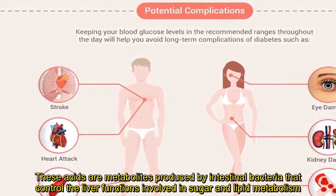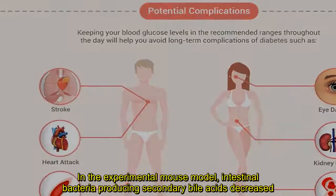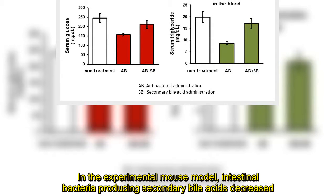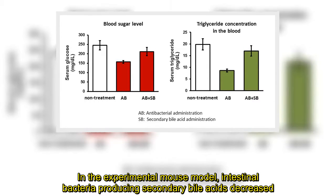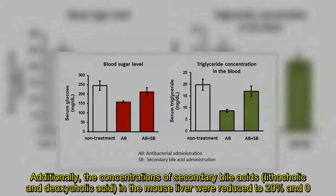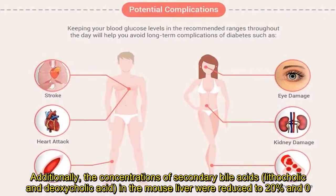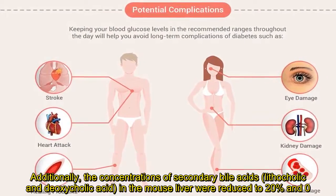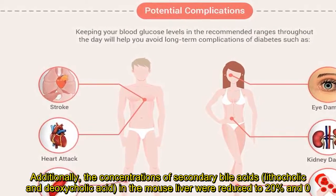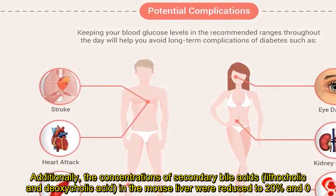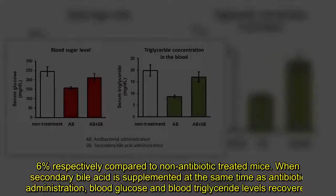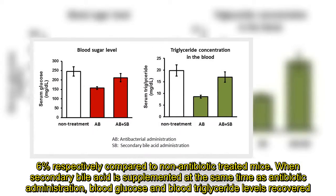In the experimental mouse model, intestinal bacteria producing secondary bile acids decreased. Additionally, the concentrations of secondary bile acids — lithocholic and deoxycholic acid — in the mouse liver were reduced to 20% and 0.6% respectively compared to non-antibiotic-treated mice.